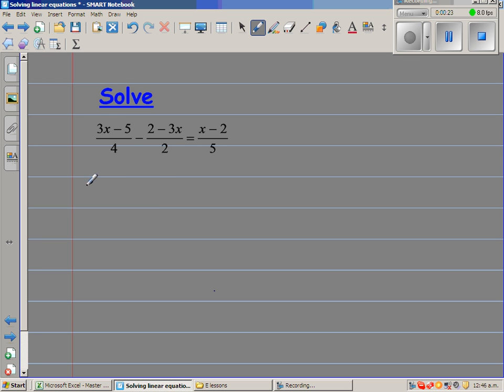To get rid of these denominators, I will first find the least common multiple of 2, 4, and 5. Multiples of 2, 4, and 5.